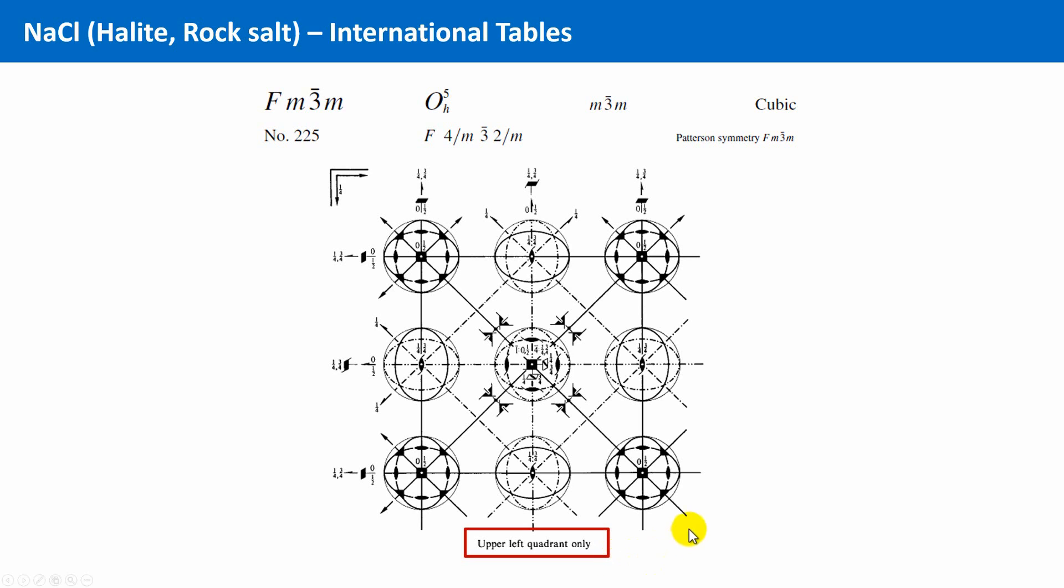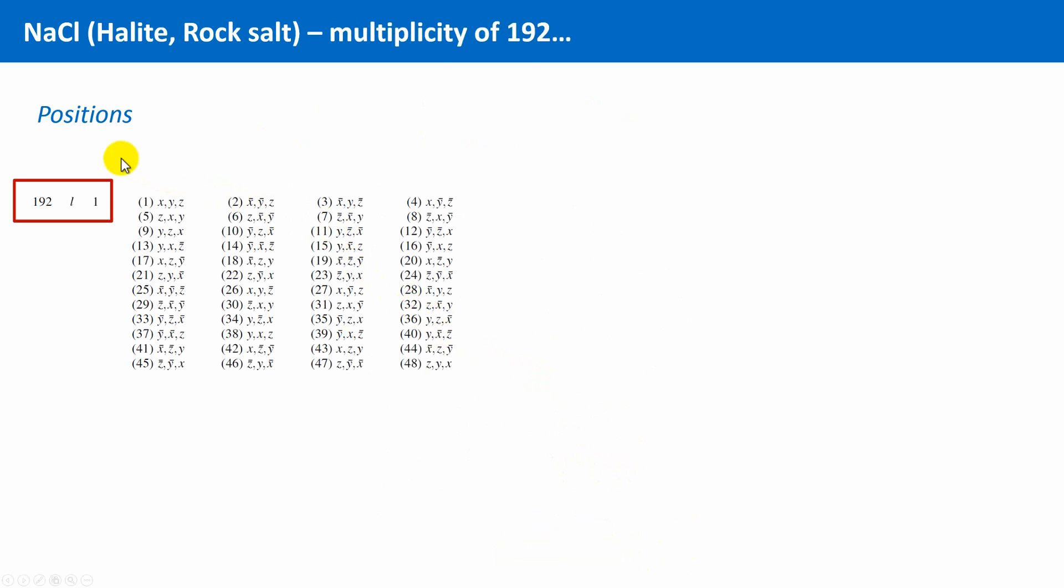There are numerous symmetry elements present. And each symmetry element will generate copies of a given atom, of a given species. We can have a look at the international tables with the positions. Indeed, at a general position, the multiplicity is 192. So, then this should result in a messy unit cell, or not? The question is, why does our rock salt structure look so relatively simple, while the symmetry framework of this space group is so complicated?